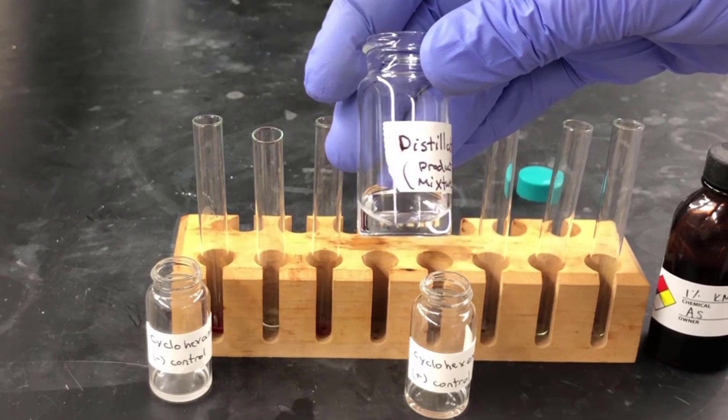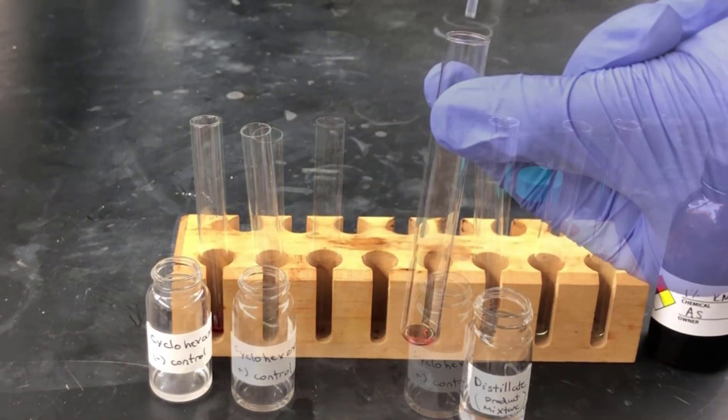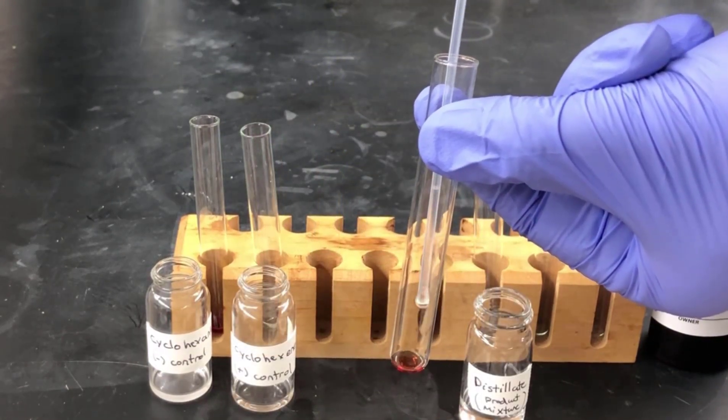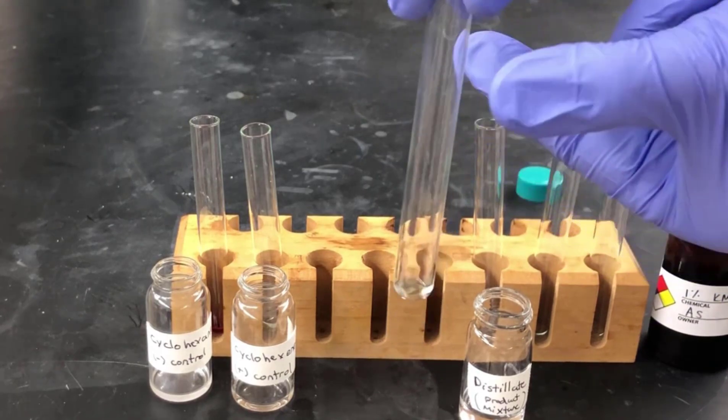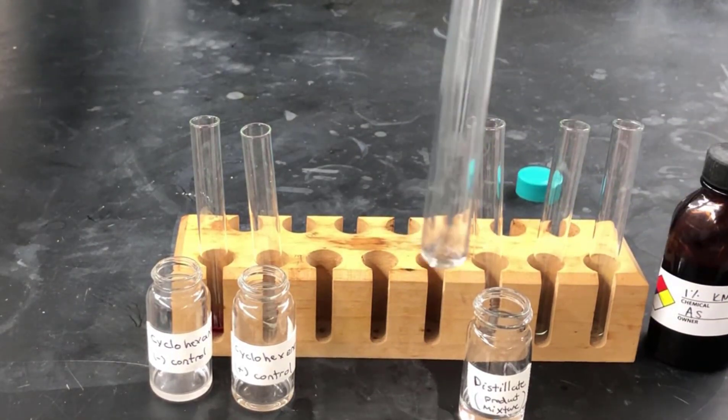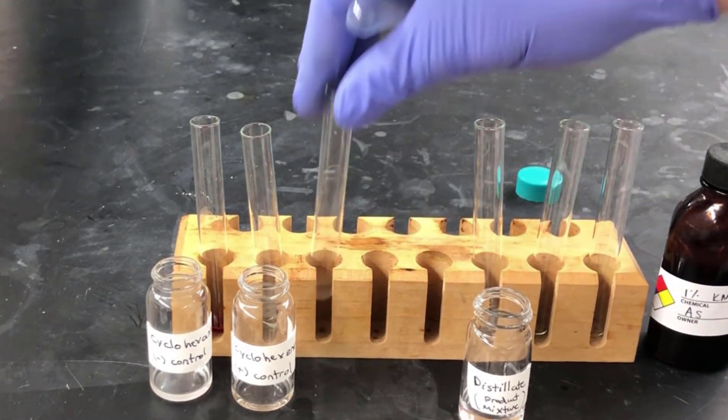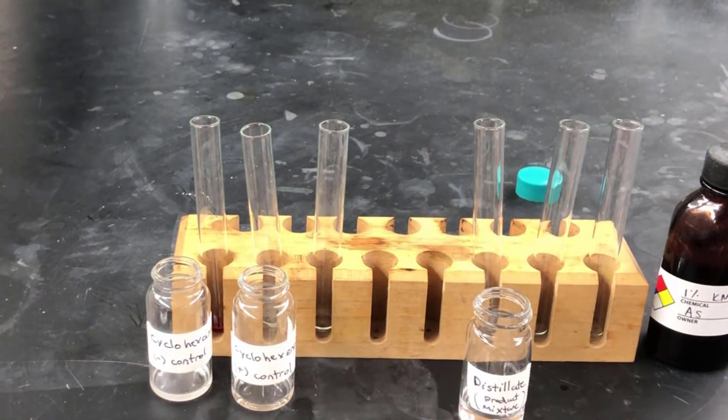Next, we'll do our product mixture, the distillate we collected from the previous step. We'll add a couple of drops of that material and note the result. The color disappears, indicating a positive test. This confirms the reaction mixture contains an alkene, a carbon-carbon double bond.